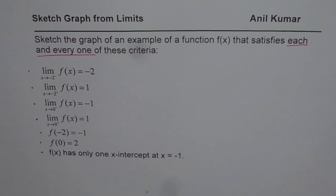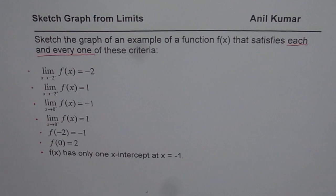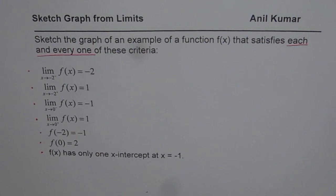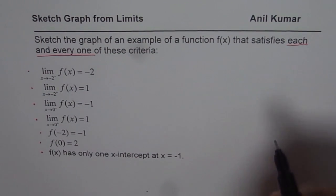So we are given one-sided limits at two different points: at x = -2, from the left it is -2 and from the right it is +1; at x = 0, from the left it is -1 and from the right it is +1. The function values are given at both points: at -2 it is -1, and at 0 it is 2. The only x-intercept is at x = -1. I would also like you to write down the equation of your function which satisfies all these conditions.